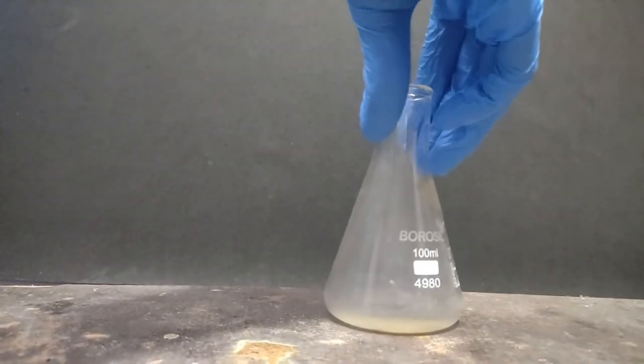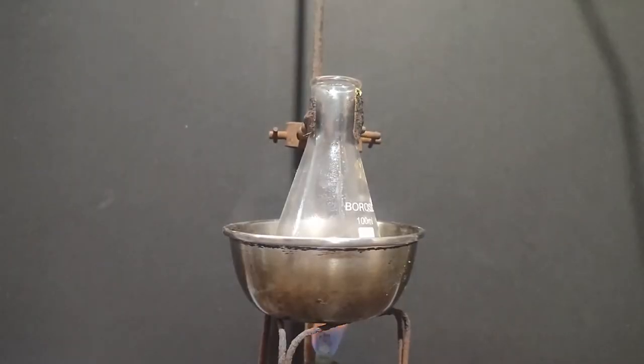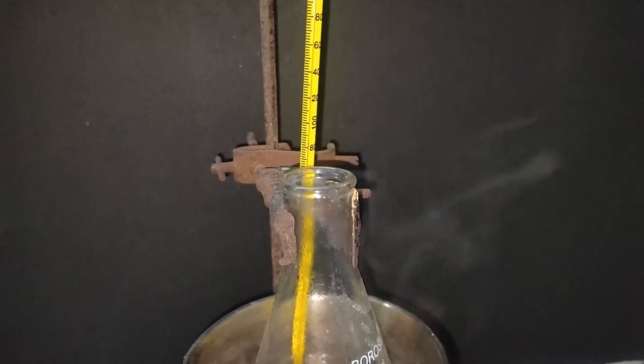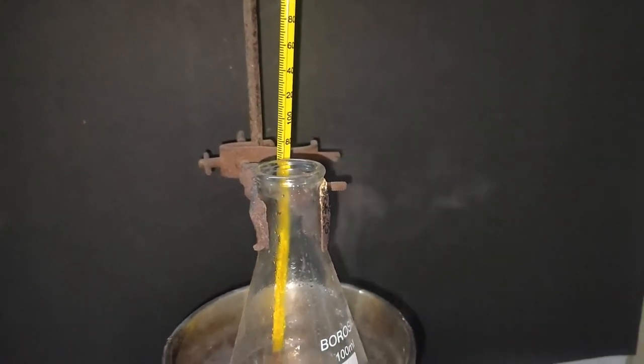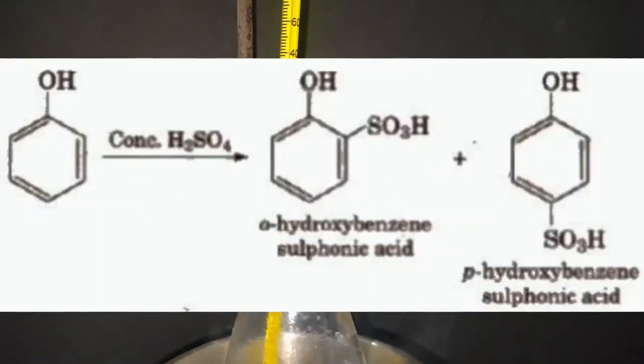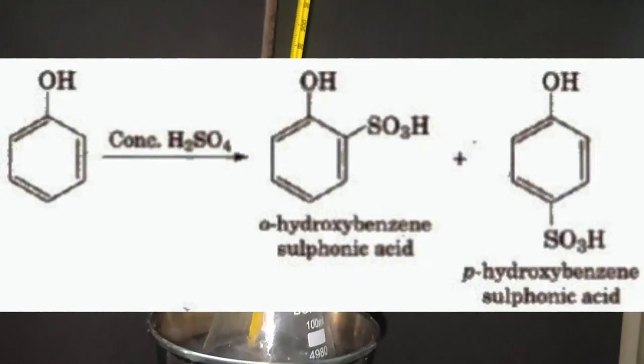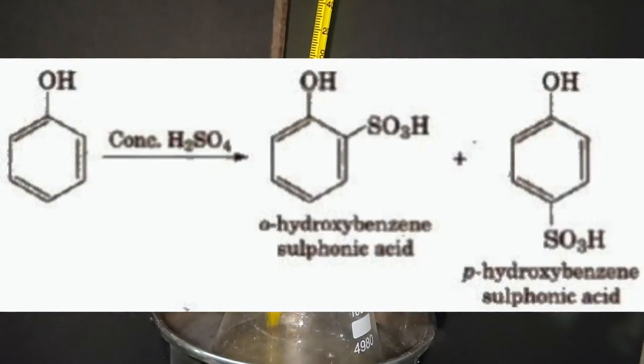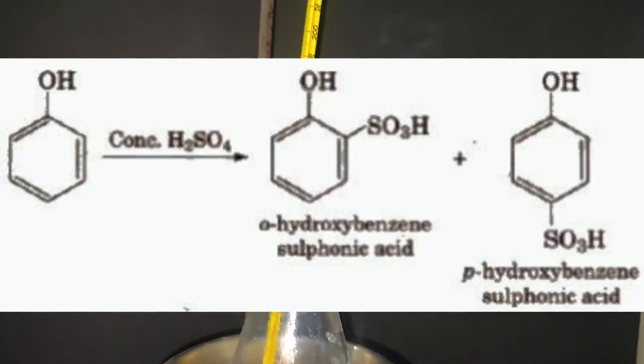The flask was shaken thoroughly and then it was heated on a water bath for 35 minutes. I also placed a thermometer in the water bath to see the temperature. In this step, the phenol is getting sulfonated at ortho and para positions to form ortho and para hydroxy sulfonic acid.